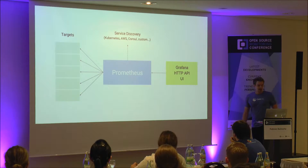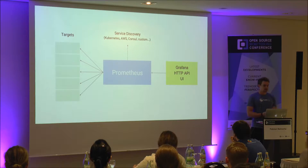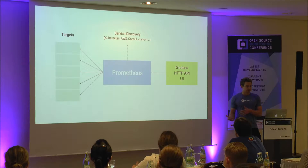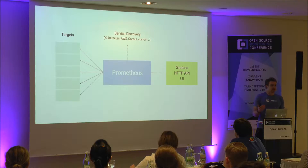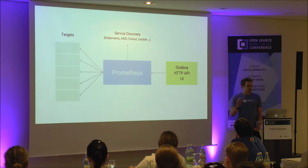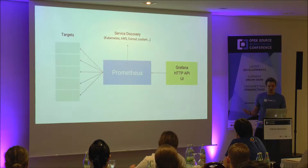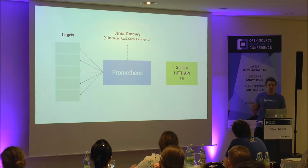A quick recap of how Prometheus works: it's a single binary which handles retrieval of data, storing data, and making it available for querying. It integrates with a variety of service discovery systems — Kubernetes, AWS EC2, Azure, Consul, or any custom system. Prometheus asks your service discovery system what's out there to monitor, then goes to all those targets and scrapes them for metrics using a simple format. We have a query language, and you can use an HTTP API or Grafana to query the state from Prometheus.